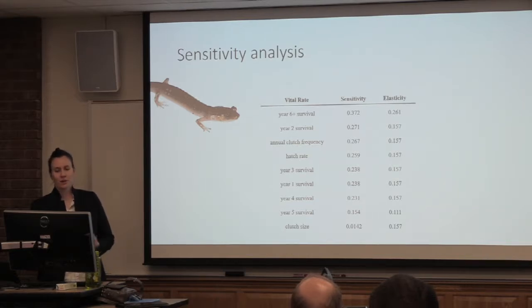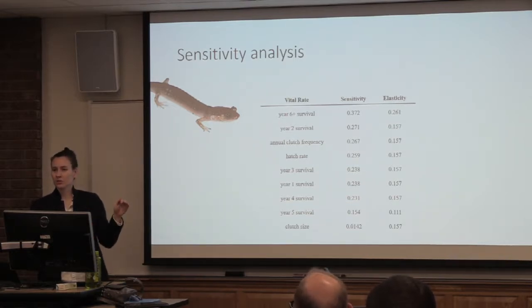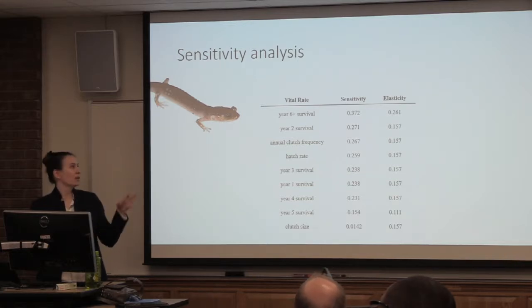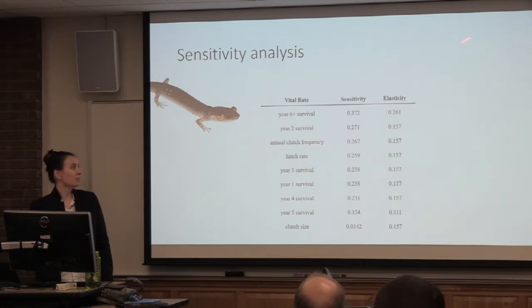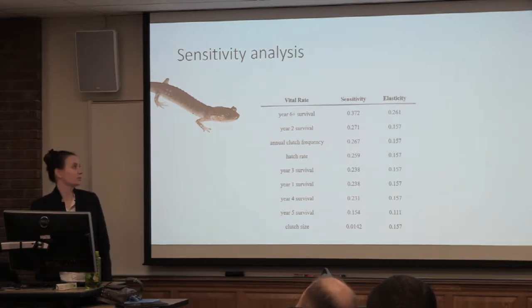That's interesting for a number of reasons. This means that mature adults are really important in the population — once they reach maturity, they need to stick around for a while because their survival is so influential on population growth rate. But additionally, recruitment is also really important. We need these young animals to survive so that we can get recruitment of the population.